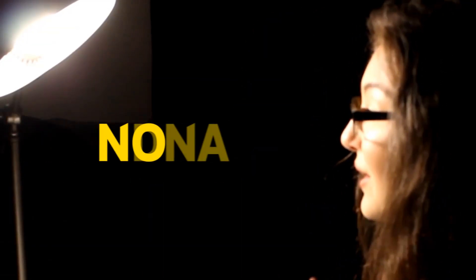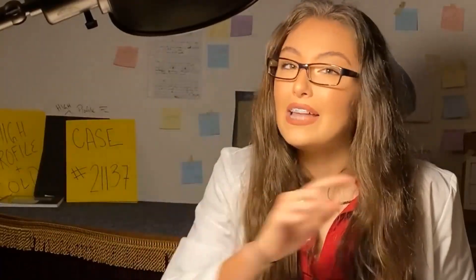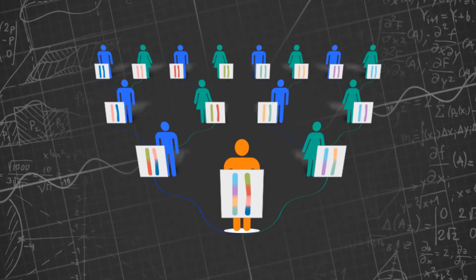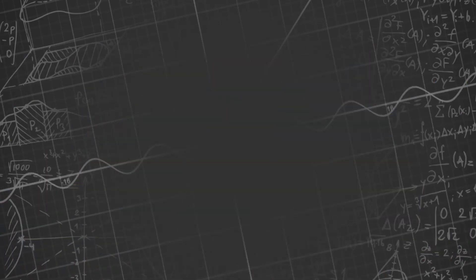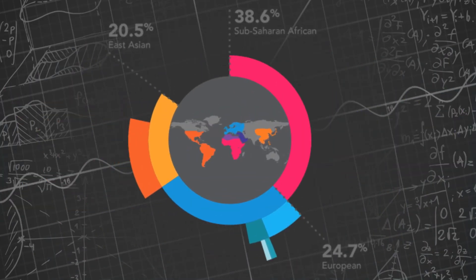However, what if there is no DNA reference sample that can compare with the evidence? That's where the controversial new technology of familial DNA analysis comes into play. Familial DNA analysis takes advantage of the fact that DNA is passed down from generation to generation, and because of this, it is possible to use public DNA databases such as 23andMe, Ancestry.com, and GEDmatch in order to find biological relatives to the sample in question.